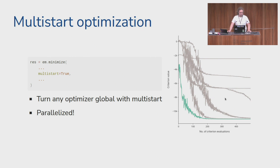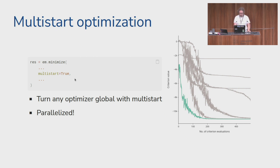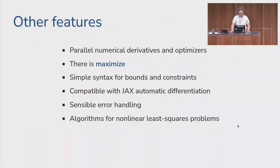Another approach to global optimization is the multi-start framework. You can take any optimizer from the word cloud and run it from multiple starting values by simply setting multi_start=True. Of course you can configure how many optimizations you want to run and convergence criteria, but in the simplest case it's really that simple — and the optimization runs are in parallel. You can visualize the results and see that yes, some local optimizations only converge to a local minimum, but many converge to what seems to be the global optimum.